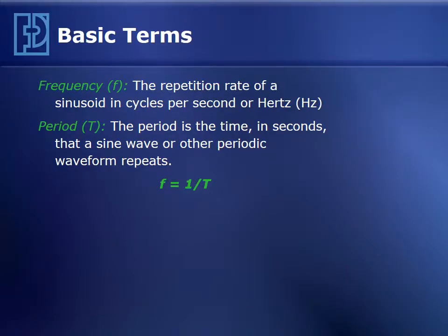I'd like to introduce a couple basic terms. Frequency is the repetition rate of a periodic signal or sinusoidal signal, represented in cycles per second or units of hertz. Period is the time for a sine wave or periodic waveform to repeat itself, and the relationship between frequency and period is an inverse one where frequency equals one over the period.